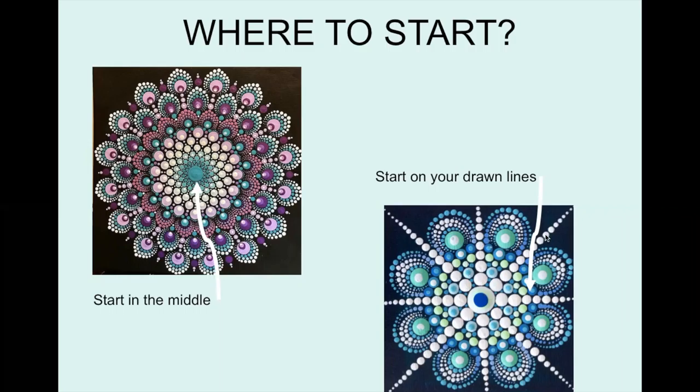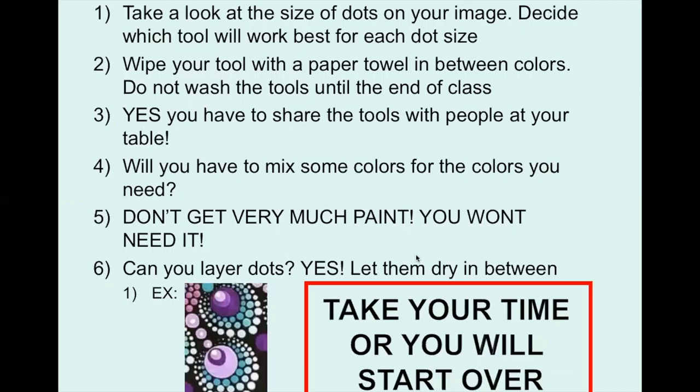Now if your mandala is circular like this, you're definitely going to want to start from the center and work your way out in circular motions. If your mandala has a snowflake or spear shape like this, I would recommend starting in the middle, then doing the points, and then working in and filling in the negative spaces in between.